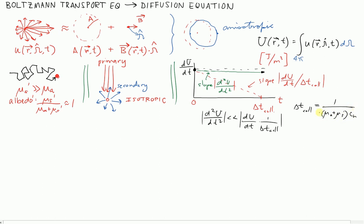We're going to define a quantity here. If we define a diffusion constant D to be c_n over 3 times mu_a plus mu_s prime, then the delta t of collision winds up being able to be written as 3D over c_n squared.